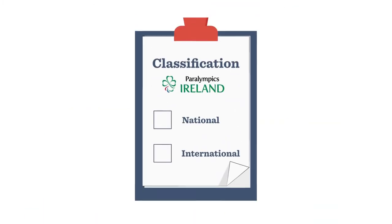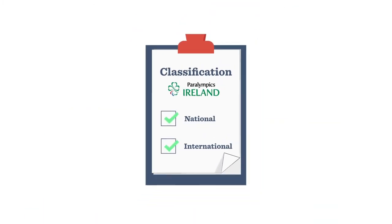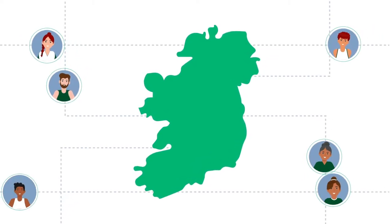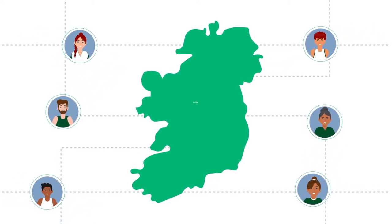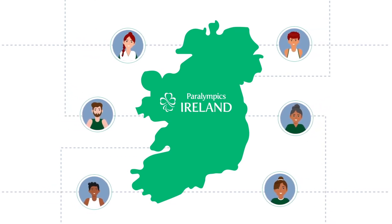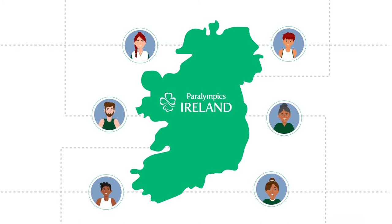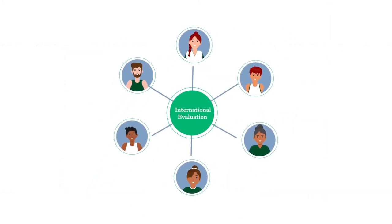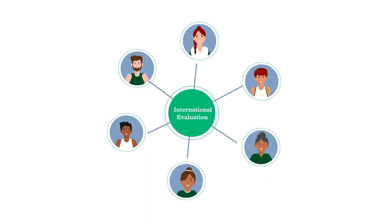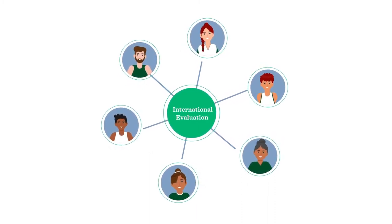There are two levels of classification: national and international. Athletes competing in Ireland must undergo national classification carried out by Paralympics Ireland in conjunction with the national governing body for each sport. This evaluation mirrors the international system as much as possible. Athletes should always be nationally classified before undergoing international evaluation.